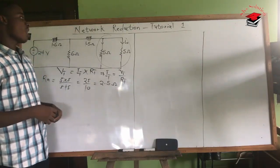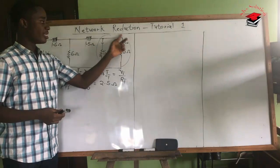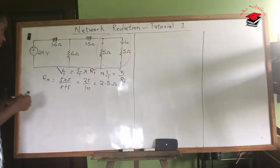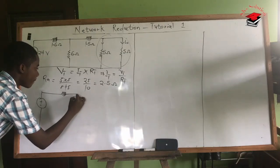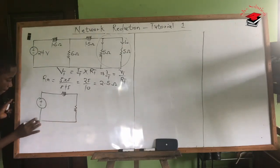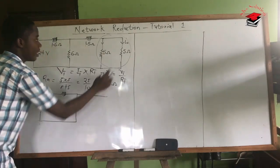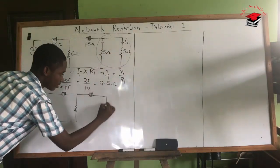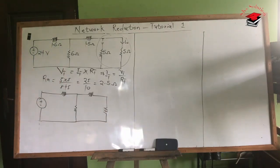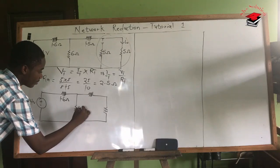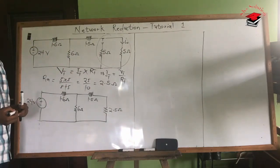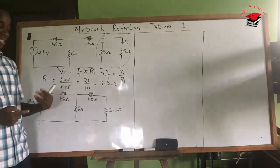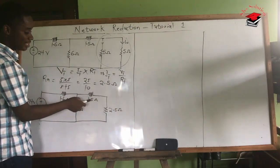That gives us 25/10, which equals 2.5 ohms. So the equivalent resistance of the two 5-ohm resistors in parallel is 2.5 ohms. We are going to draw the circuit again and replace that portion of the network with 2.5 ohms. So we have our source, the 1.5 ohms here, and the equivalent of the two resistors which is 2.5 ohms connected here.